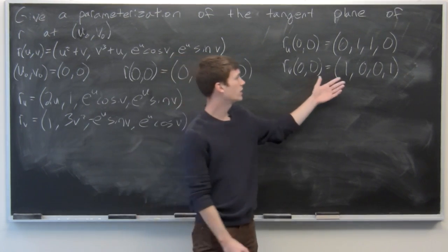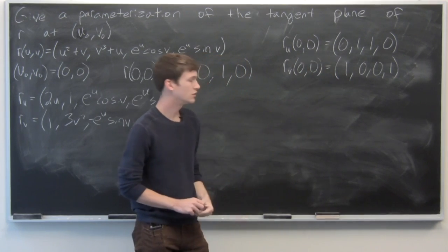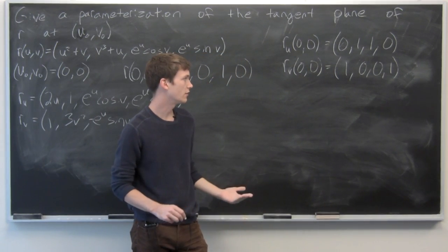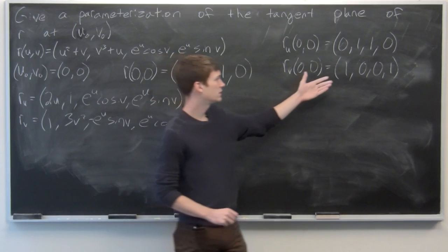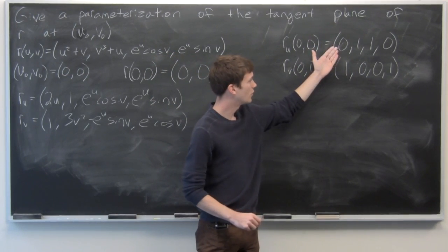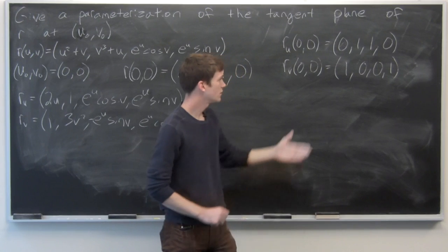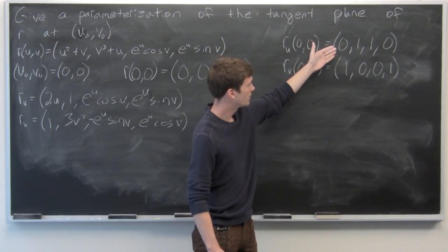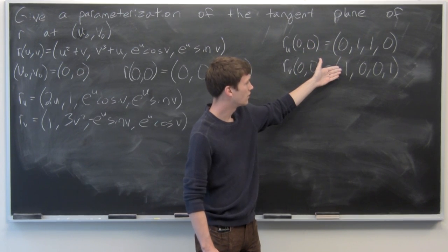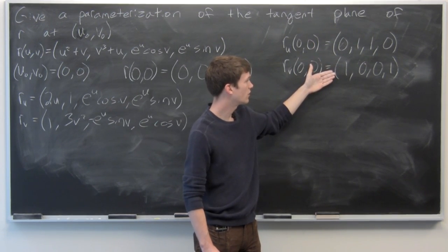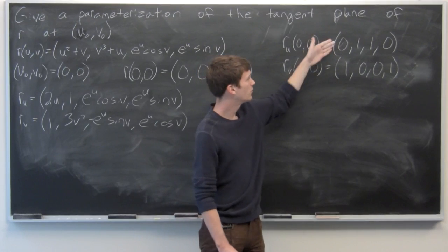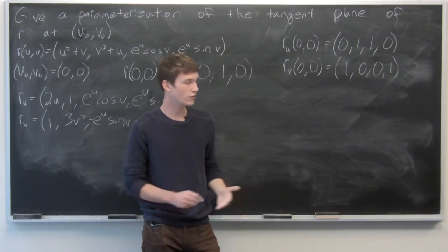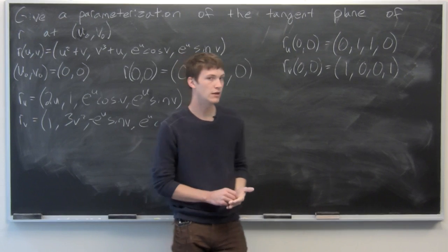By inspection, these two vectors are linearly independent, since there's a 0 in the first component of the first vector and a 1 in the first component of the second. To make a linear combination, we'd have to multiply the second vector by 0, but the first vector isn't the zero vector.